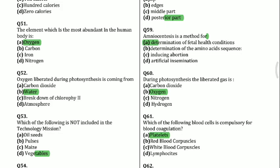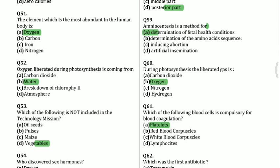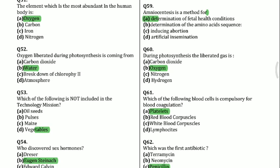Hello friends, welcome to Elementary General Knowledge. This is the second part of biology MCQ questions. Today we start from question 51. The element which is most evident in the human body is oxygen. Oxygen liberated during photosynthesis is coming from water.